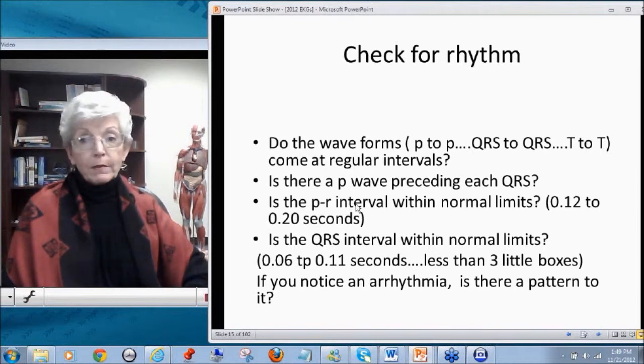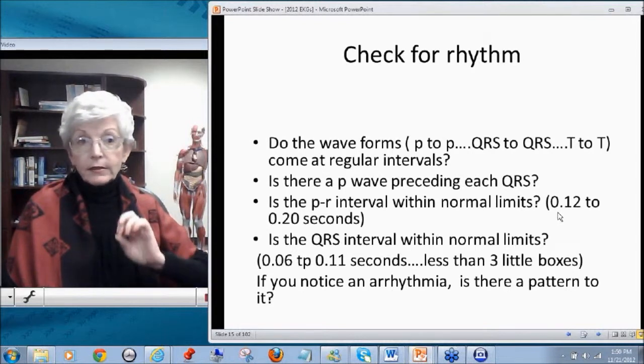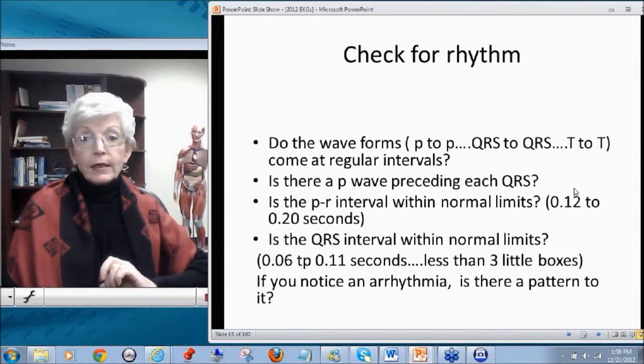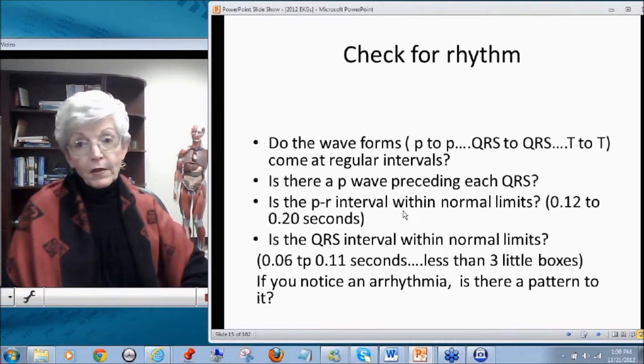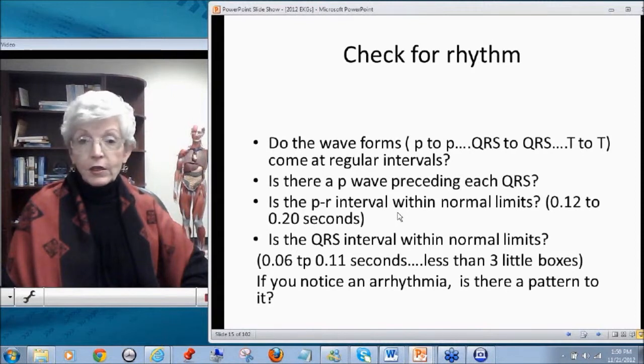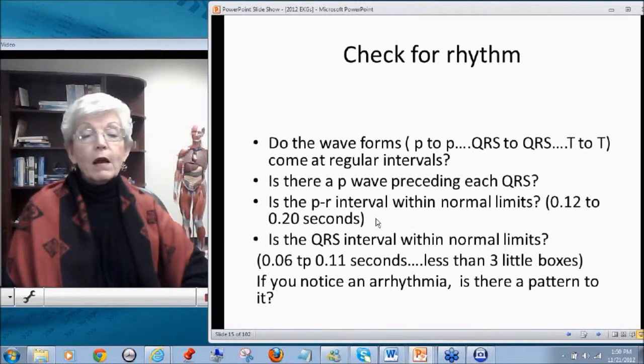You want to count time frames. Is the PR interval within normal limits? And a normal PR interval is 0.12 to 0.20 seconds. So if each little box is 0.04, literally we're talking about three to five little boxes. 0.12 to 0.20 seconds is the normal time frame for a PR interval. And if it's shorter than that, that's abnormal. And maybe that P wave did not conduct that QRS. If it is longer than that, maybe there is some degree of heart block.